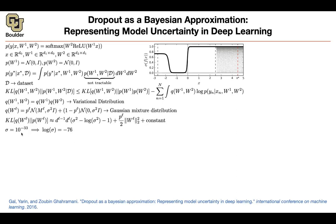If you set sigma to be very small — essentially machine precision — that term becomes a constant and we can get rid of it. What happens next? If you keep sampling from this distribution, you recover your mean M_L, which has the same dimension as W_L. And then you have Z_L's sampled from a Bernoulli distribution. If you recognize this, this is basically dropout — you are dropping some of your outputs, equivalently dropping some rows in your matrix M.